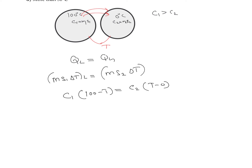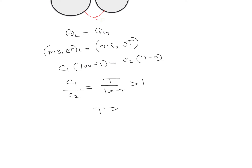Rearranging, C1/C2 = T/(100 − T). Since C1 > C2, we know C1/C2 > 1, so T > 100 − T, which gives 2T > 100, therefore T > 50°C. The final common temperature is greater than 50°C.